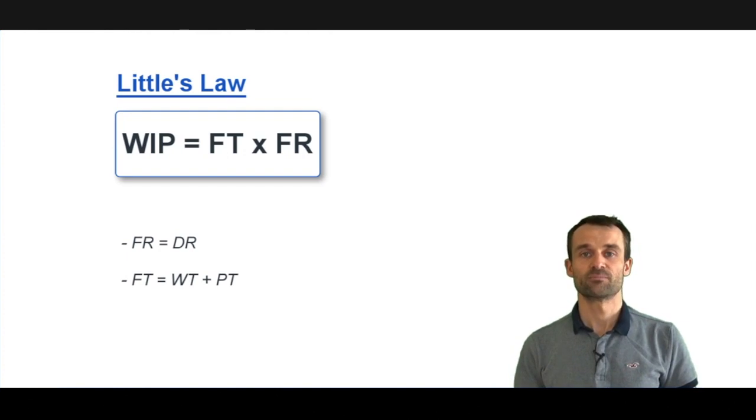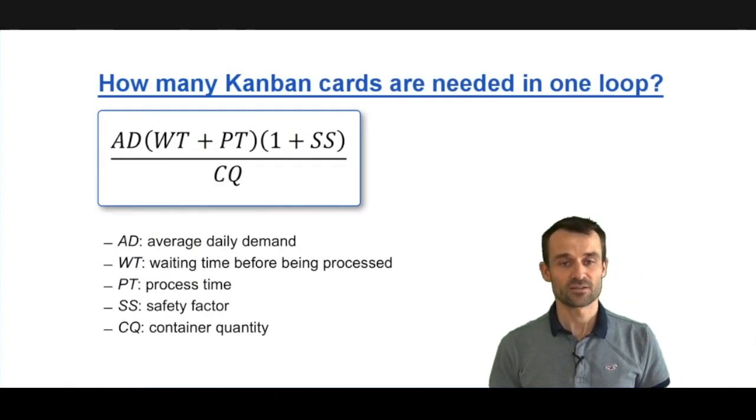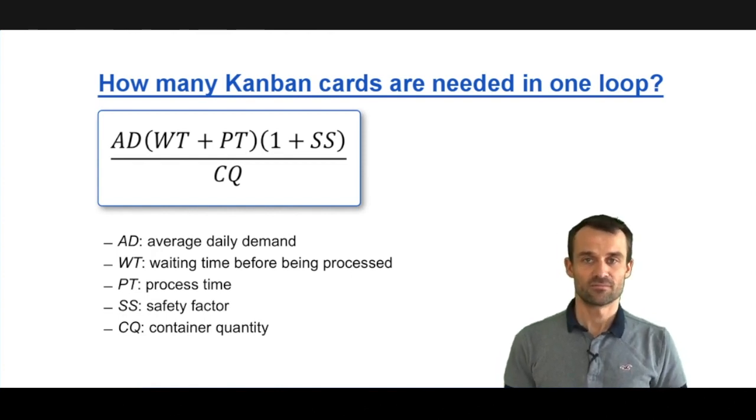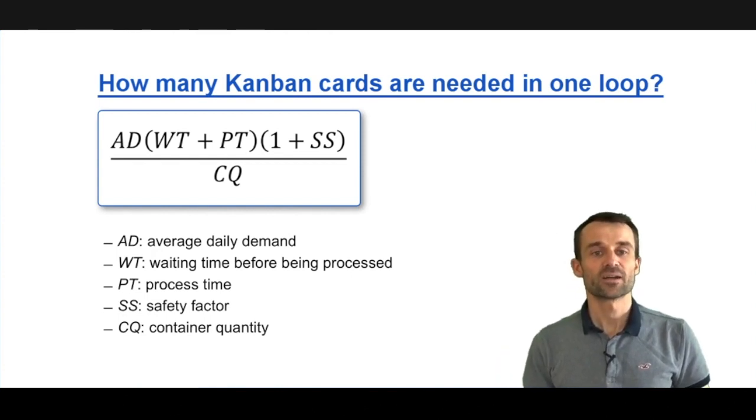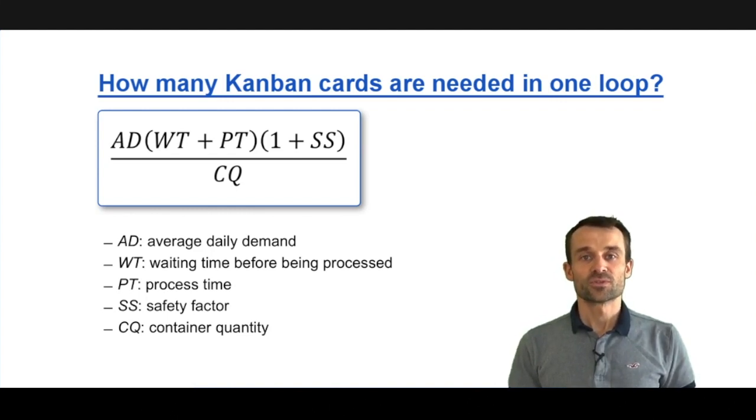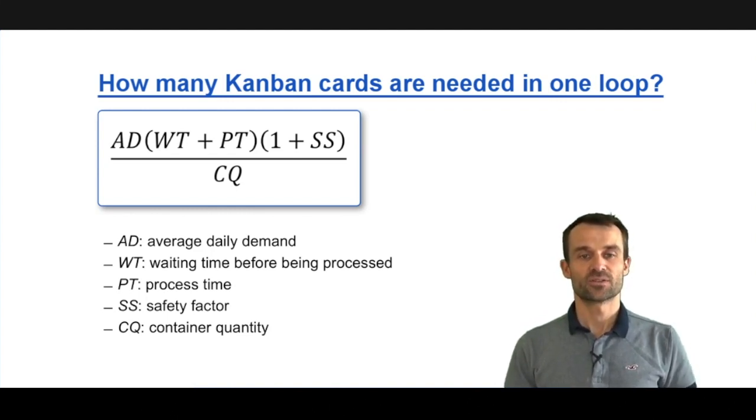That results in the following formula for the number of Kanban cards. The first part, flow rate, is AD (average demand rate) divided by the container quantity CQ, because we assume that for one Kanban card a number CQ of items are attached to it.